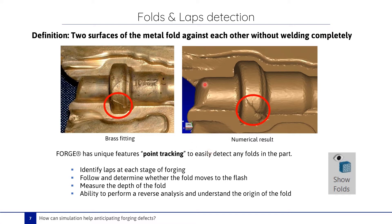To detect folds and lapse, a point tracking feature is available in Forge. To use it, you need to go to the ribbon and click on 'show faults.' Using point tracking, this feature allows the identification of lapse at each stage of forging, and the determination of whether the fault moves to the flash. We can also measure, thanks to this point tracking, the depth of the fold. These features also give the ability to perform a reverse analysis and understand the origin of the fold.